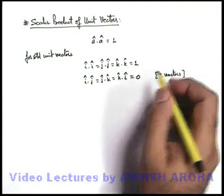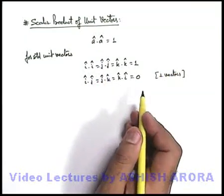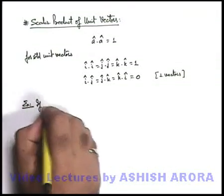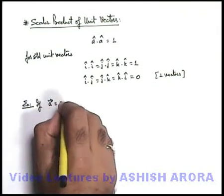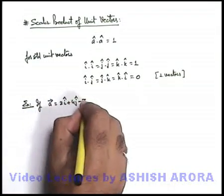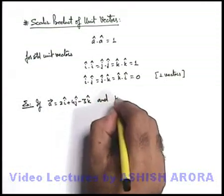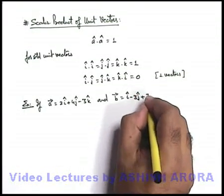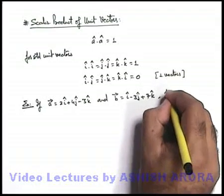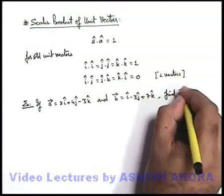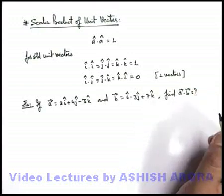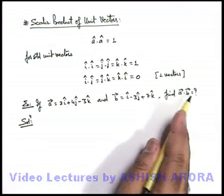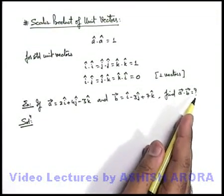Using this concept we can easily multiply two vectors represented in unit vector form. For example, if A = 2î + 4ĵ − 3k̂ and B = î − 3ĵ + 7k̂, and we are required to find A·B, since we are finding the dot product the result will just be a numerical value or magnitude.